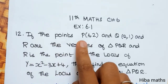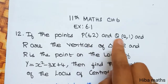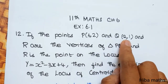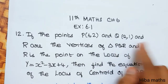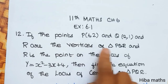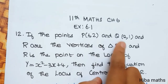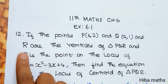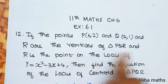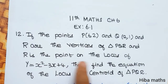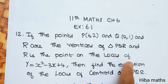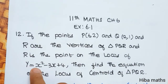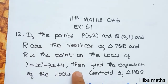If the points P(6,2) and Q(-2,1) and R are the vertices of triangle PQR, and R is the point on the locus of y = x² - 3x + 4, then find the equation of the locus of the centroid.